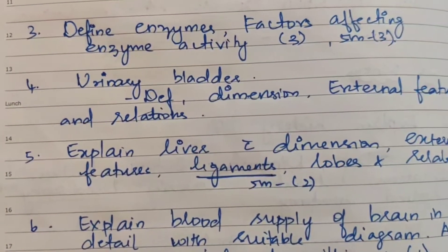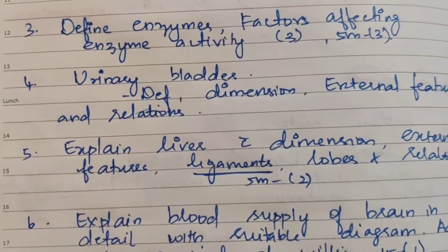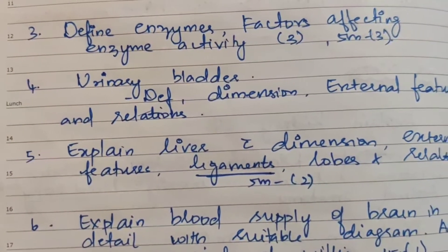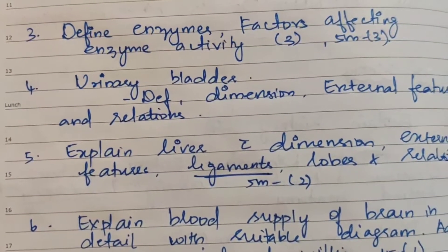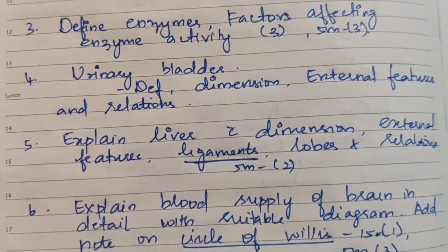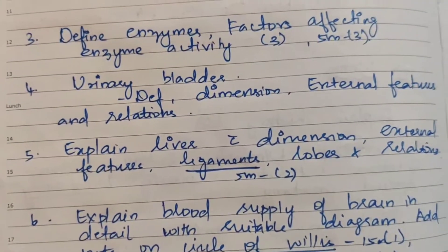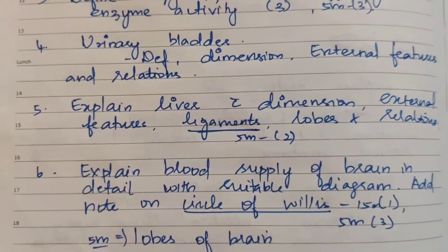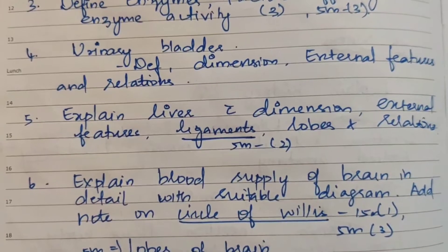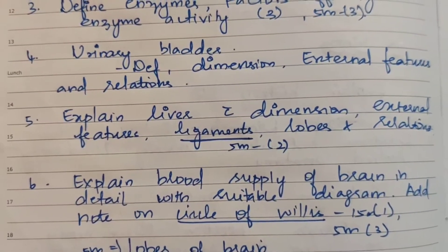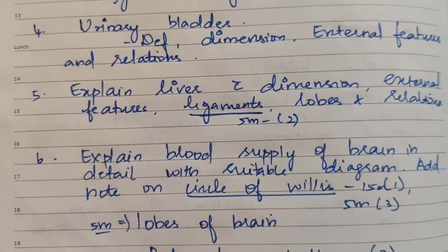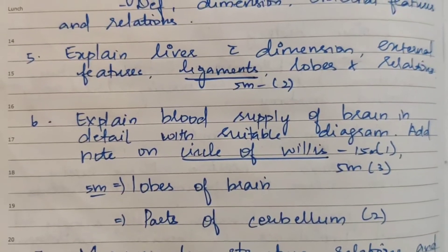Define enzymes and factors affecting enzyme activity — this has appeared 3 times as a 15-mark question. Factors affecting enzyme activity have appeared 4 times. The urinary bladder is the 4th topic, with subtopics including definition, dimension, external features, and relations.